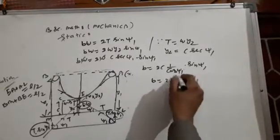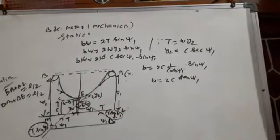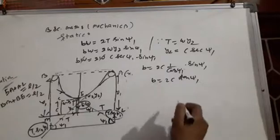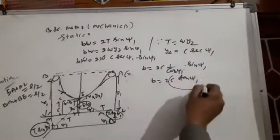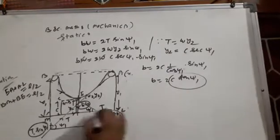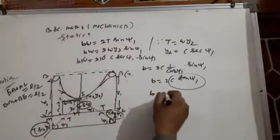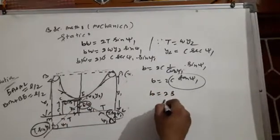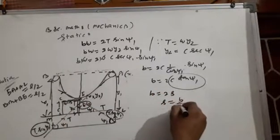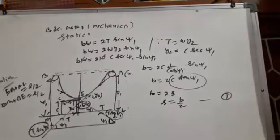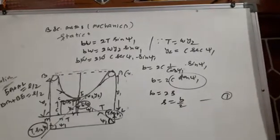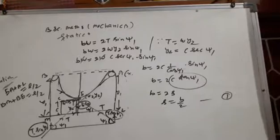This is equal to c·cosecθ. And y equal to c·tanθ1. So this will become: distance — b equal to 2s. Then, if s equal to b/2, that is equation number one.